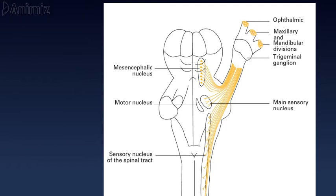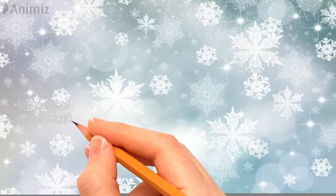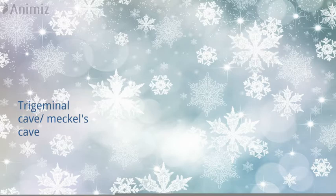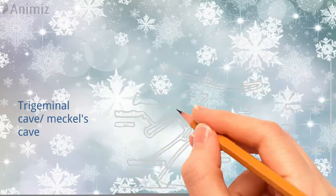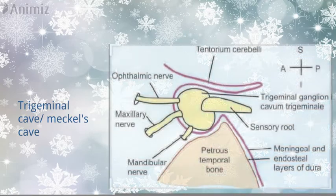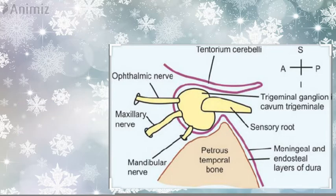Both roots travel to the trigeminal cave. The trigeminal cave is a truly cave-like structure formed by arachnoid-lined dura mater. We can see it sits above the petrous bone and below the tentorium cerebelli, where the dura invaginates to form a cave-like space. The sensory root and motor root pass through this space, and the sensory root expands into the trigeminal ganglion.